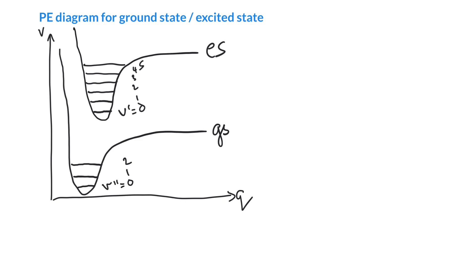One of the things we have to remember is that the spacing between the vibrational levels is very great. At room temperature, almost all molecules are in the ground vibrational state. So we're going to be starting off in this ground vibrational state, V double prime equals zero. We have to go ahead and write the wave function for vibrational motion, which basically looks like an exponential curve.